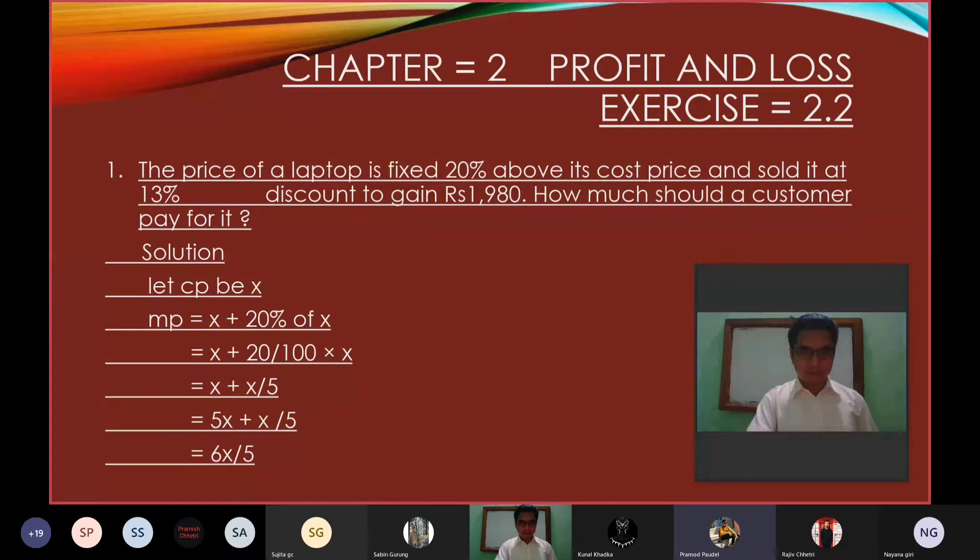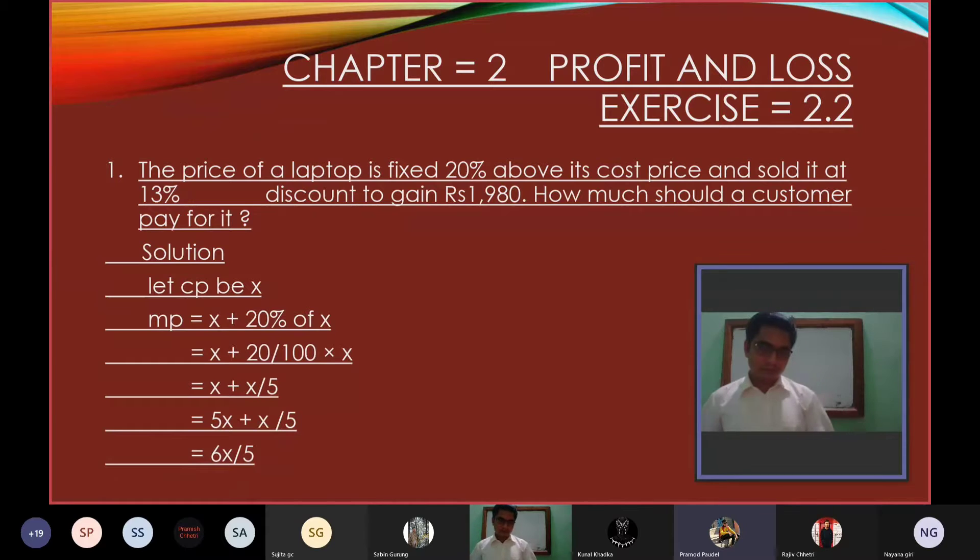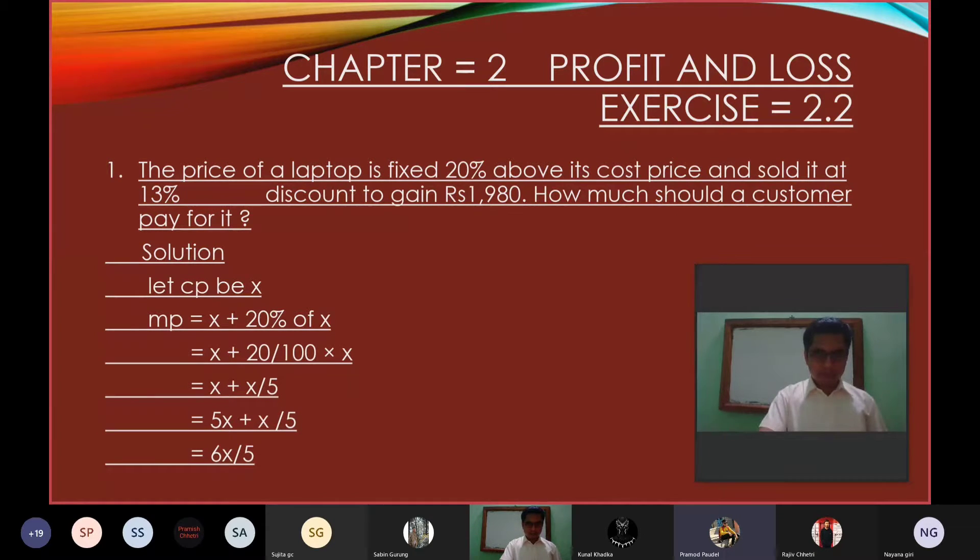Chapter 2, Profit and Loss, Exercise 2.2. Question 1: The price of a laptop is fixed 20% above its cost price and sold at a 13% discount to gain Rs 1,980. How much should a customer pay for it?